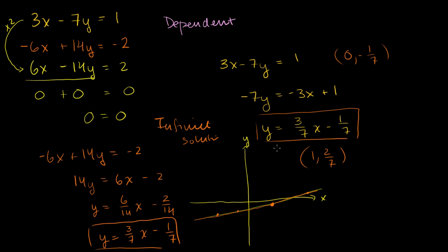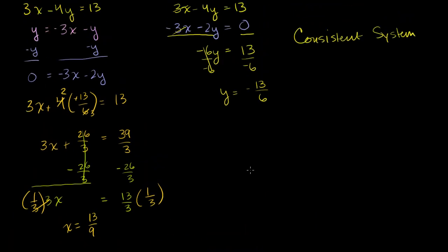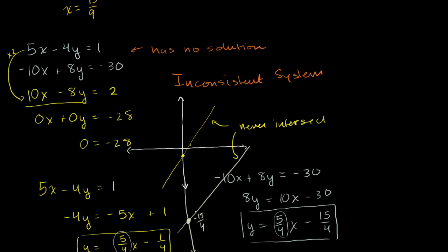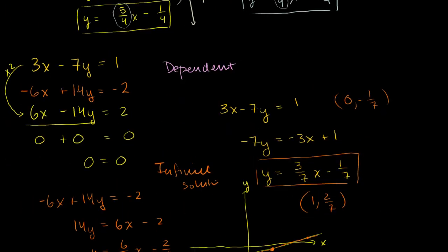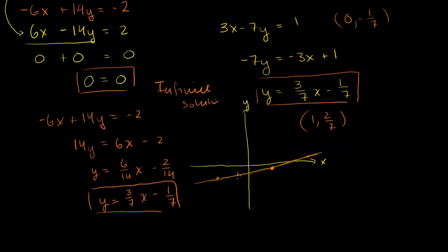Let me review. We started with a plain vanilla case where you actually get a solution — that is a consistent system, where the lines intersect at one point. Then there's the situation where you get something crazy like 0 equals negative 28 — that's an inconsistent system with no solution, meaning the lines are parallel and never intersect. Finally, if you get something always true like 0 equals 0, that's a dependent system — the equations represent the same line, and you can verify it by putting both into slope-intercept form.